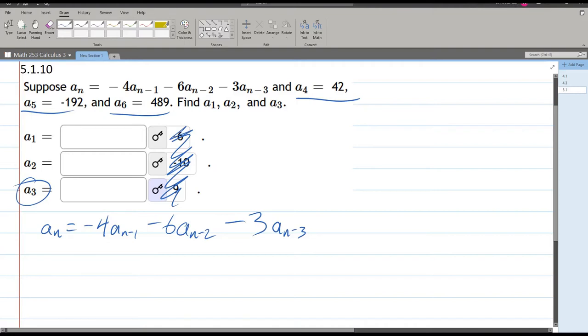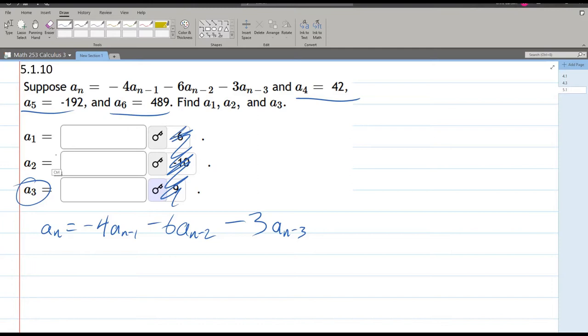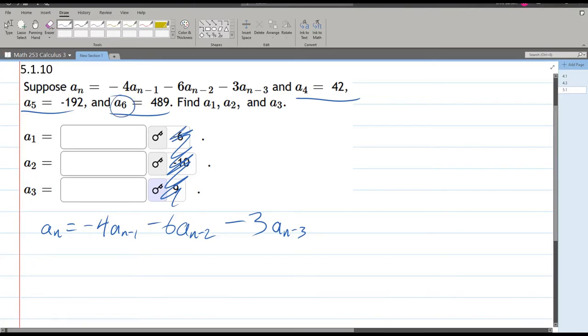So what we're going to do instead is we're actually going to go to the other end, and we're going to look at the furthest, the biggest term we have, a6. And I'm going to write this using the formula above. So n is 6, so n minus 1 is 5. So this is a5 minus 6, a n minus 2 is 4, minus 3 a n minus 3. 6 minus 3 is 3. The good news is we have 3 of the 4 terms.